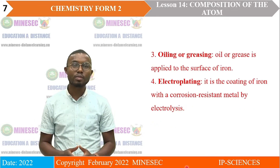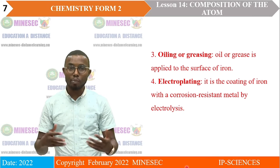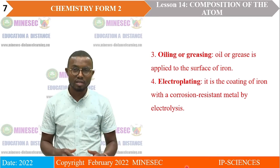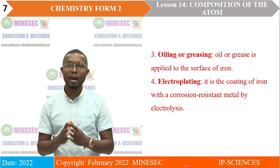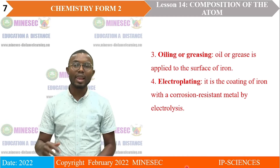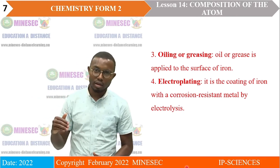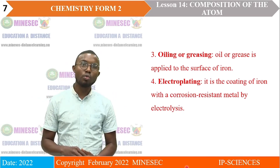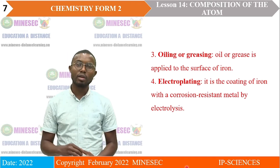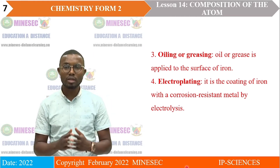The third method is oiling, also called greasing — oil is applied to the surface of iron, which helps prevent oxygen from attacking the iron. And lastly, we can also prevent rusting by electroplating, which is a chemical process that involves coating iron with a corrosion-resistant metal by the process of electrolysis.